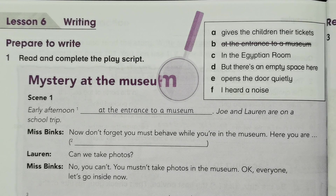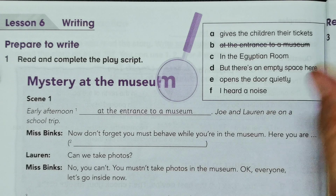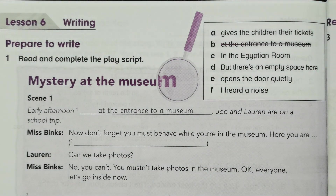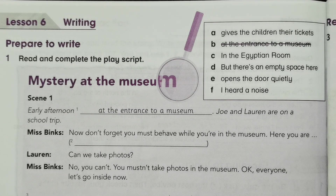Scene 1: early afternoon at the entrance to a museum. Joe and Lauren are on a school trip. This one already gives an example, so we just try to complete it. Number 1 is B. Next, Miss Binks says: 'Now don't forget, you must behave while you're in the museum. Here you are.'